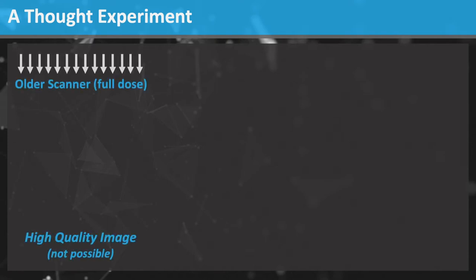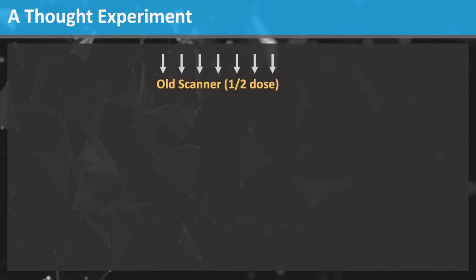Let's do a Where's Waldo thought experiment, where Waldo represents a small, early stage tumor that is curable and potentially detectable on high quality CT images. Let's say your mom has abdominal pain and weight loss for a few months and you advise her to get a CT scan. She goes to one of your facilities.